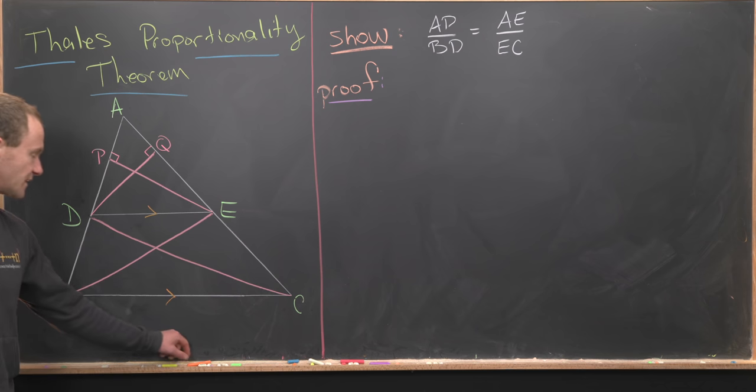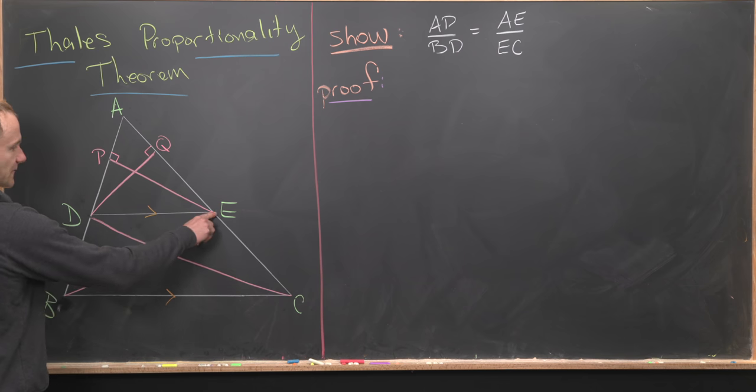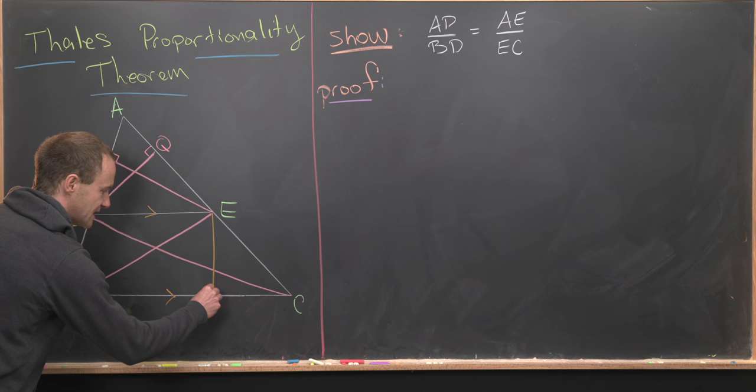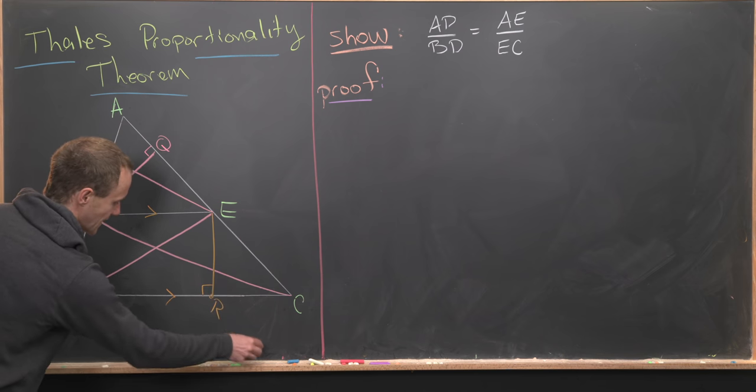Then I'm going to do one more thing and drop a perpendicular from maybe this point E down to BC, although we could drop it from anywhere along this line segment DE. But I'll just take it from here down to here. That's perpendicular and I'll call this point R.